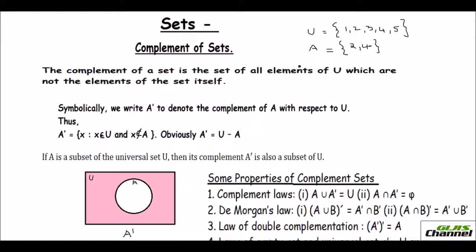Now the complement of set A — I would denote it by A complement, written like this. So your A complement would be all the elements which are in the universal set but not in the set A. So all the rest of the elements are 1, 3, and 5. So that is your A complement — the set of all elements of the universal set which are not elements of the set itself.